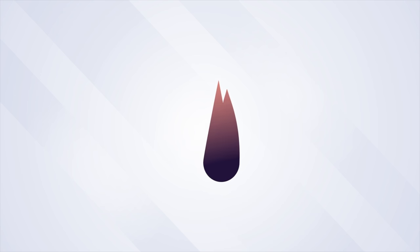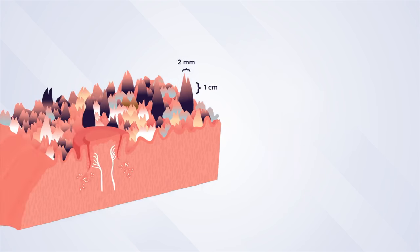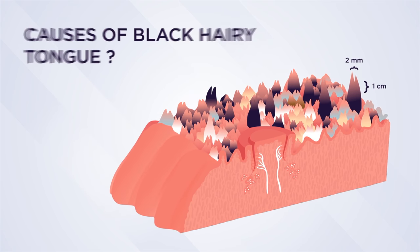However, sometimes this condition can occur due to a precipitating trigger which when corrected or avoided will often resolve the discoloration within weeks to months. So what are some of these triggers that might cause a black hairy tongue?